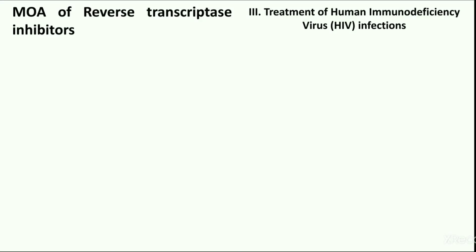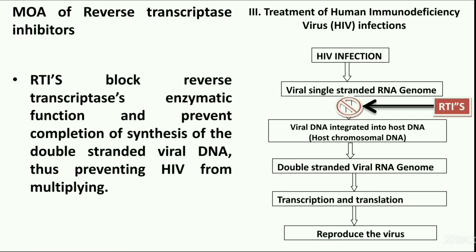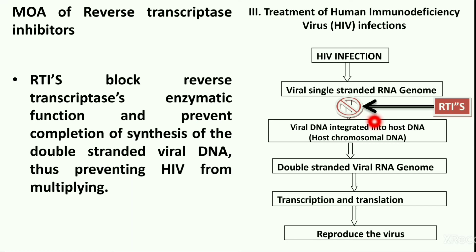Regarding the mode of action of reverse transcriptase inhibitors: when HIV infects a cell, the enzyme reverse transcriptase copies the viral single-stranded RNA genome into double-stranded viral DNA. This viral DNA is then incorporated into host chromosomal DNA. Further, the generation of the double-stranded viral RNA genome allows host cellular processes such as transcription and translation to reproduce the virus. Reverse transcriptase inhibitors act by inhibition of the reverse transcription process, which is responsible for virus replication.